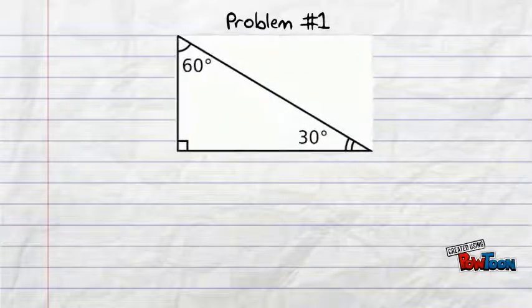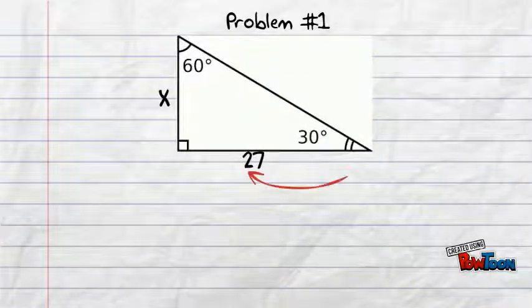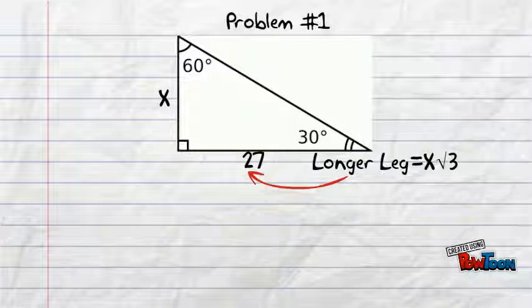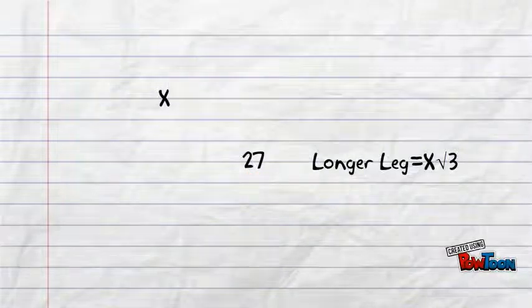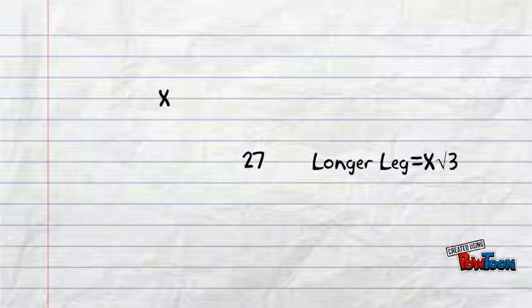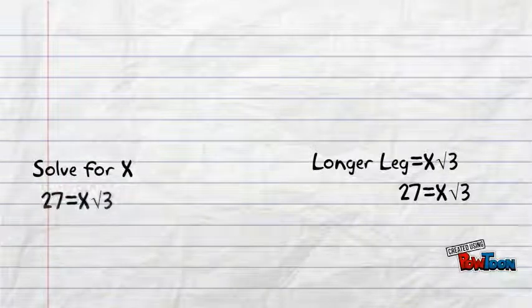Those problems were easy enough. Now, let's try a challenge. In this problem, we are looking for the original x value and are given the value of the longer leg, which is 27. In order to find x, we have to solve for x with the value that is given and its corresponding formula form. So, now, we have the equation 27 equals x root 3.